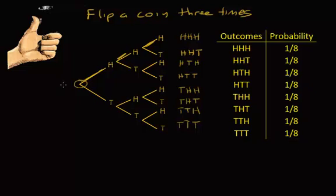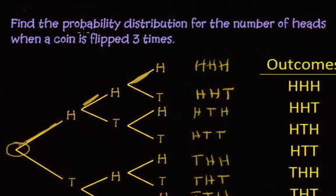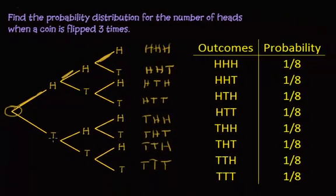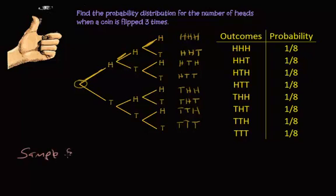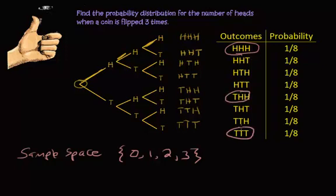Let's change the example a little bit. Let's find the probability distribution for the number of heads when a coin is flipped three times. Our sample space: what are the outcomes? I can get zero heads, one head, two heads, or three heads — and you can see all of these from the tree diagram above.